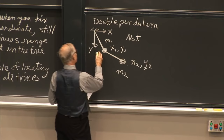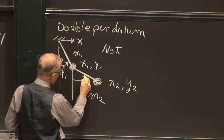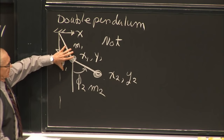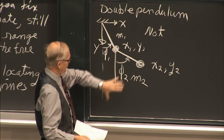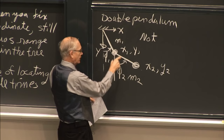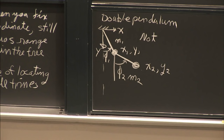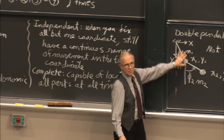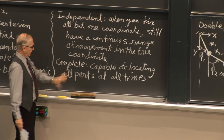If instead we choose angles phi1 and phi2, let's do the independence test. If you fix phi1, is there still free and continuous movement of phi2? Sure. If you fix phi2, the whole system can still move via phi1. So phi1 and phi2 satisfy the independence requirement. Both systems are complete — capable of locating all points at all times — but only phi1 and phi2 are both independent and complete.